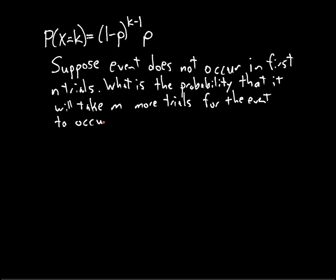As I mentioned, we're dealing with a conditional probability here. What are we trying to compute? We're conditioning on the assumption that the event does not occur in the first n trials. Since x is a geometric random variable giving the number of trials for the event to occur, this just says x is greater than n. So given that x is greater than n, what's the probability that it will take m more trials — in other words, that it takes a total of n plus m trials for the event to occur?